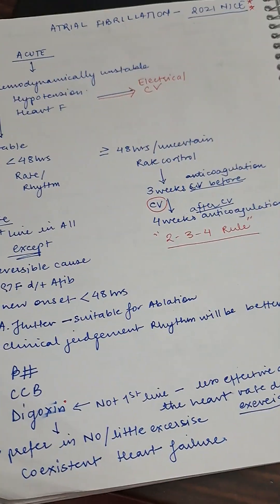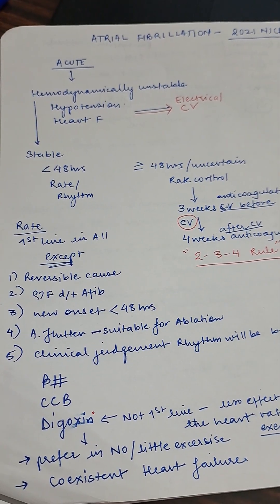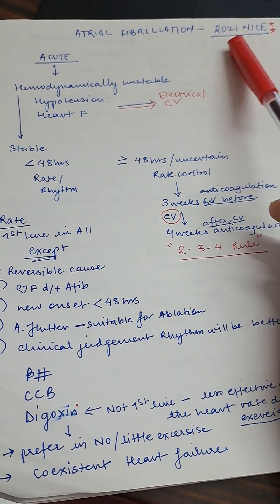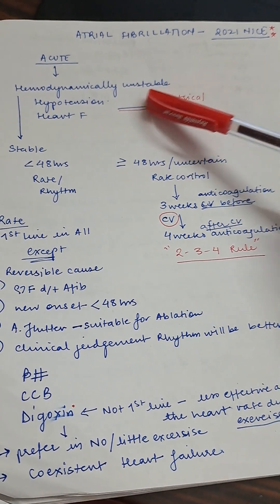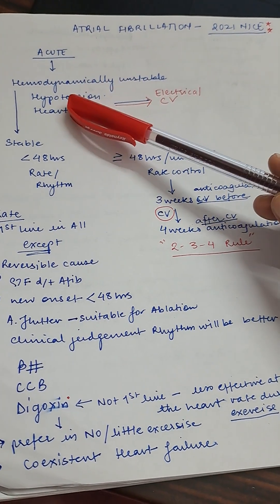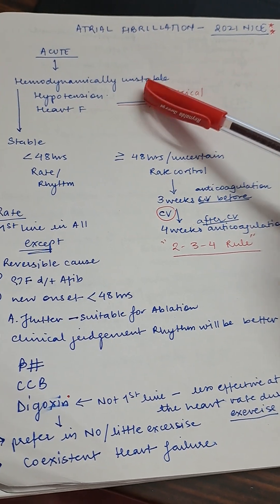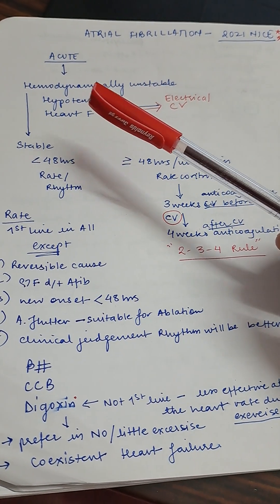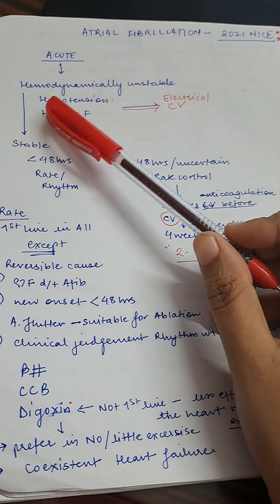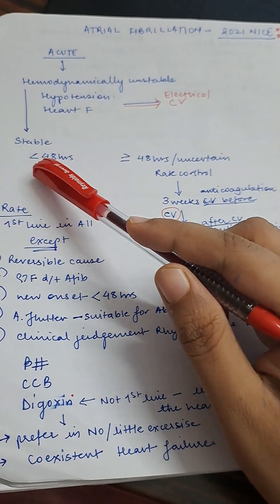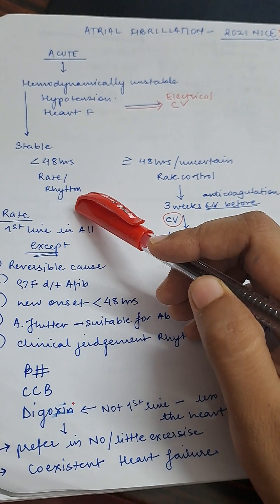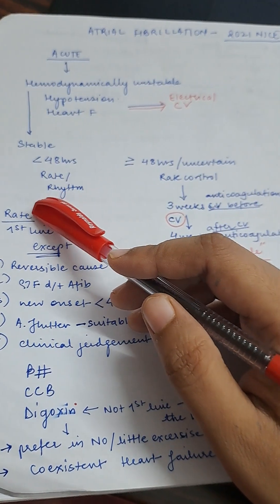Now for the management of atrial fibrillation according to NICE 2021 guidelines: in an acute condition, assess whether the patient is hemodynamically stable or unstable. If unstable — hypotension or heart failure — go directly to electrical cardioversion. If the patient is stable and the history is less than 48 hours, you can do either rate or rhythm control.